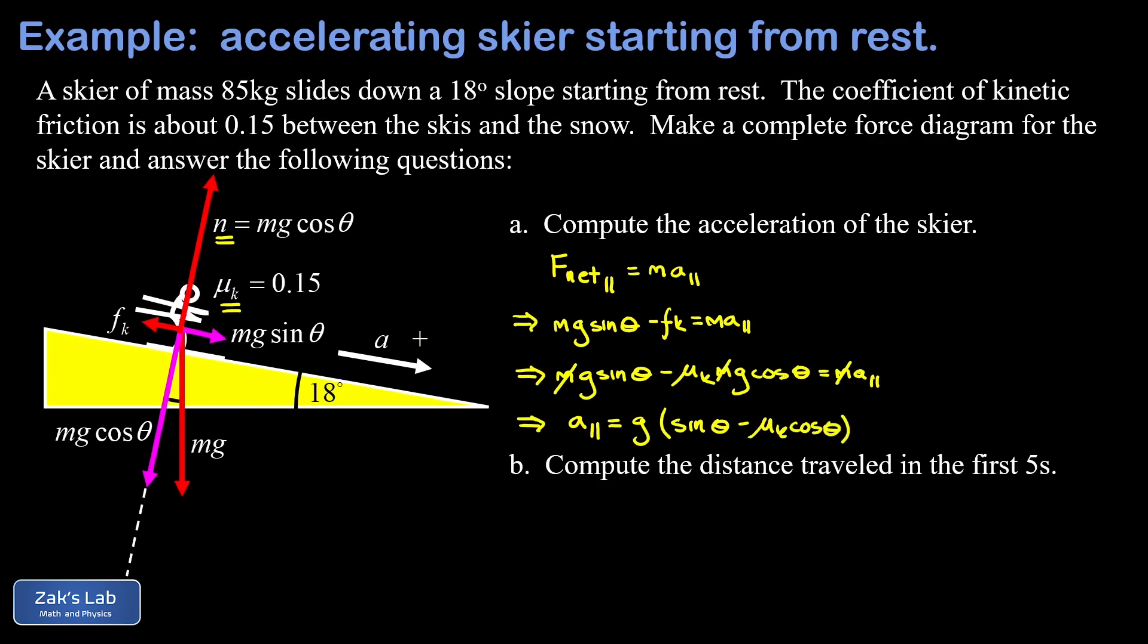Now it's time to plug in our numbers for the problem. We're going to use the approximation of g as 9.8 meters per second squared. So our acceleration is given by 9.8 times the quantity sine of 18 degrees minus 0.15 cosine 18 degrees. When I run the numbers on this to three significant digits, I get an acceleration of about 1.63 meters per second squared.